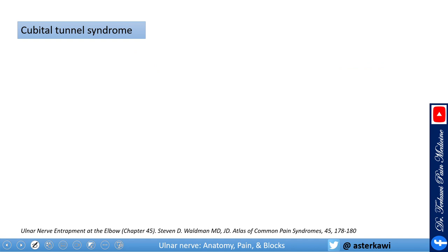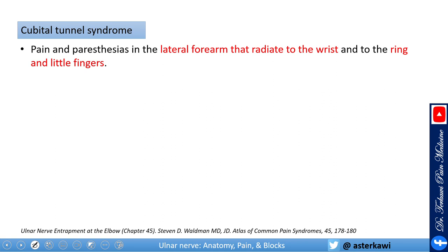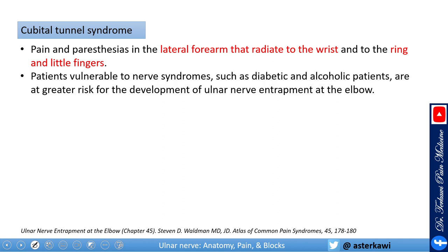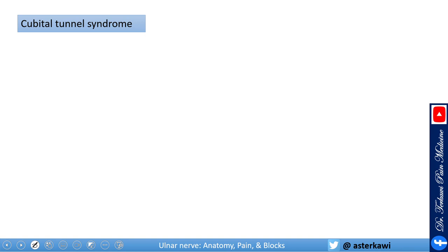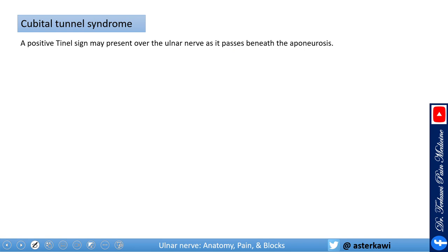Cubital tunnel syndrome presents with pain and paresthesia in the lateral forearm radiating to the wrist, ring finger, and little finger. Patients with diabetes and alcoholism are at greater risk of developing ulnar nerve entrapment and neuropathy. Symptoms usually begin after repetitive elbow motion or repetitive pressure on the elbow, such as leaning on the elbow while lying on the floor. On examination, you may get a positive Tinel's sign while pressing over the ulnar nerve as it passes underneath the olecranon.